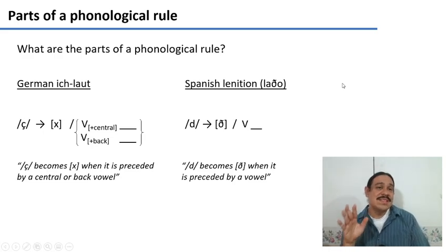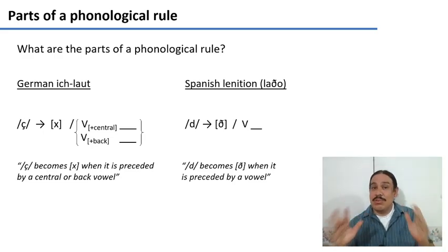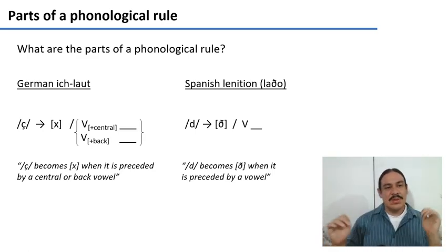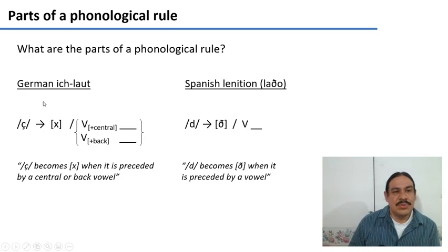So before we look at assimilation, let's just review everything we've done so far with phonological rules, make sure everything is clear. We've been looking at rules, for example, the German ich-laut, which is the change of the palatal fricative into a velar fricative whenever the sound is preceded by a central or a back vowel.